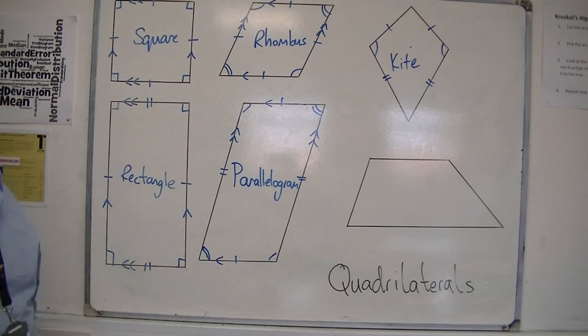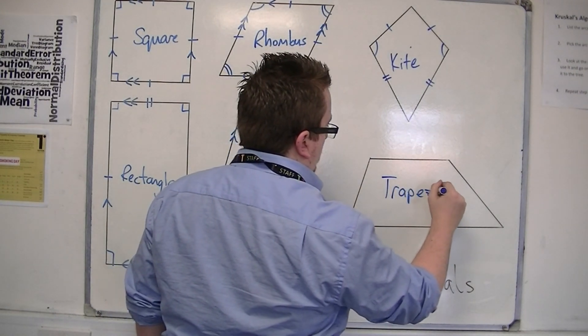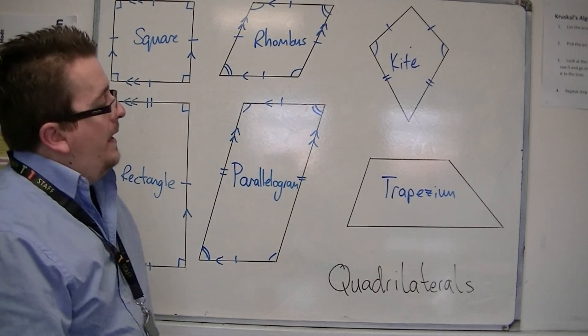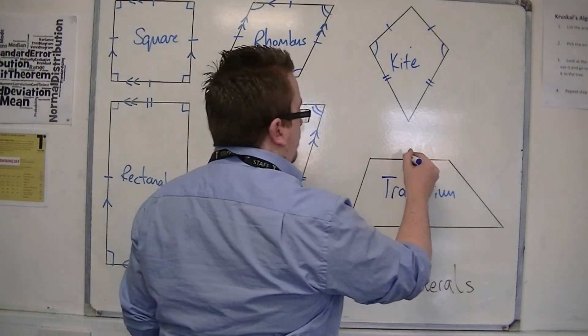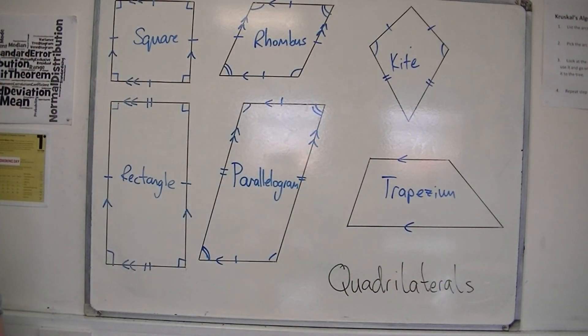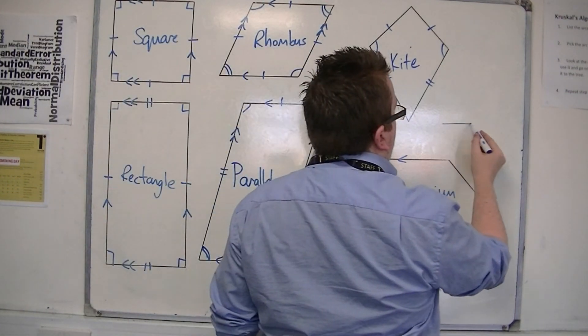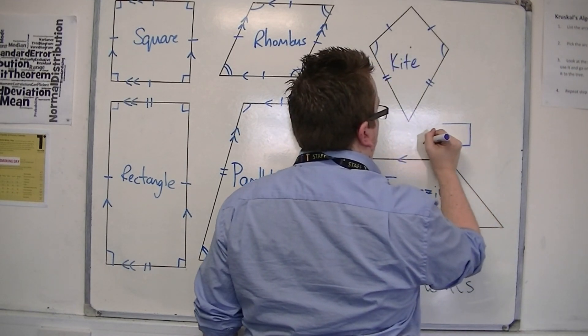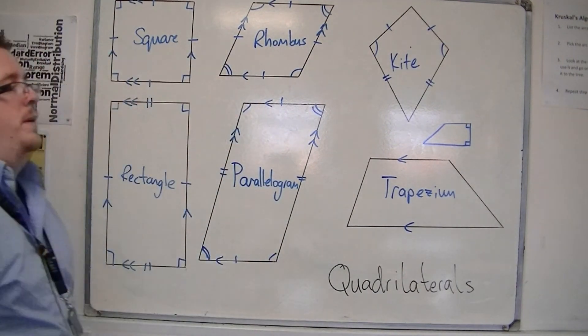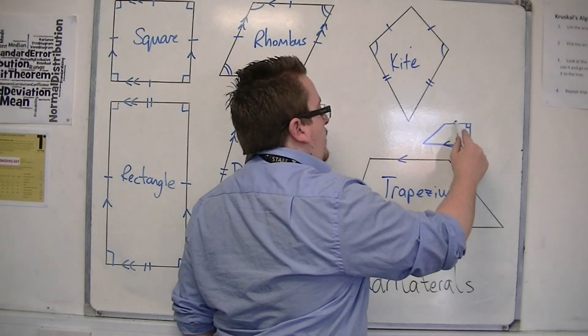And last but not least, we have the trapezium. Now, the trapezium has one pair of parallel sides. It can have right angles, but it depends how you draw it. So, you could draw it in a similar way to this. For example, that would be a trapezium also.